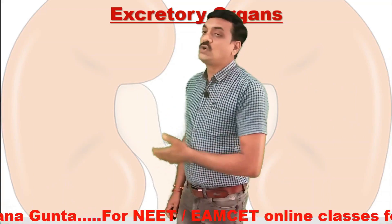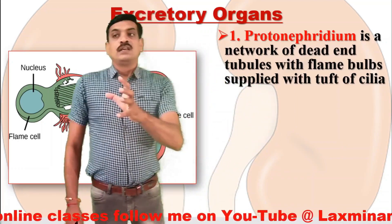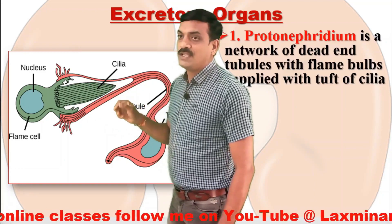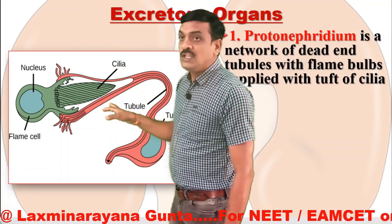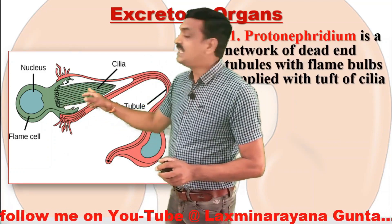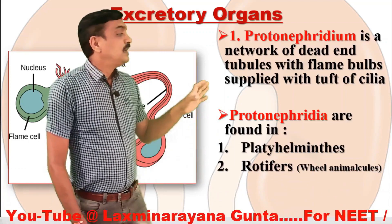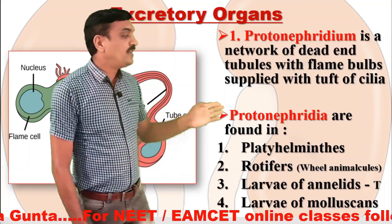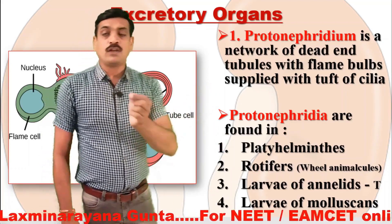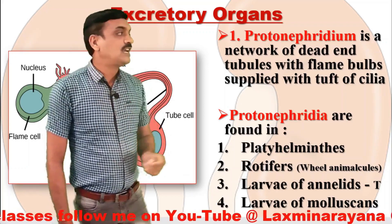Coming to platyhelminthes — they show protonephridia. Protonephridia is a network of dead-end tubules where we can observe flame cells. They are called flame cells because they look like a flame. These dead-end tubules collect the nitrogenous waste products from the body, and the process of collection takes place through cilia which open into the tubule. Protonephridia are found in platyhelminthes, rotifers (also called wheel animalcules), and larvae of annelids such as trochophore larvae, and larvae of molluscs such as veliger larvae.